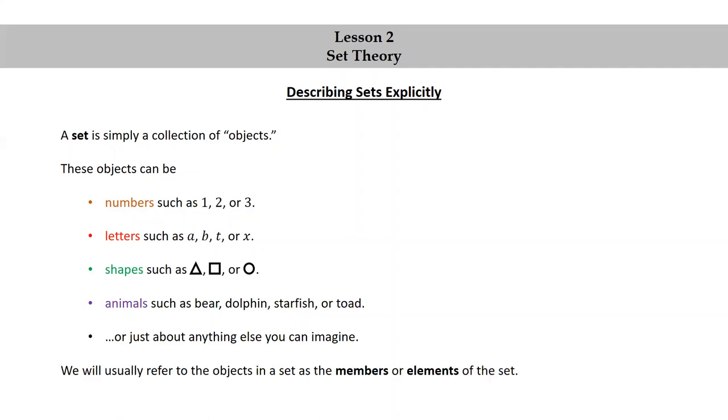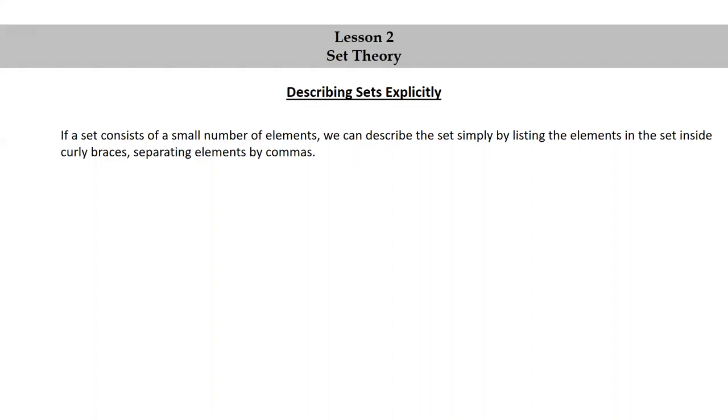We will usually refer to the objects in a set as the members or elements of the set. If a set consists of a small number of elements, we can describe the set simply by listing the elements in the set inside curly braces, separating elements by commas.